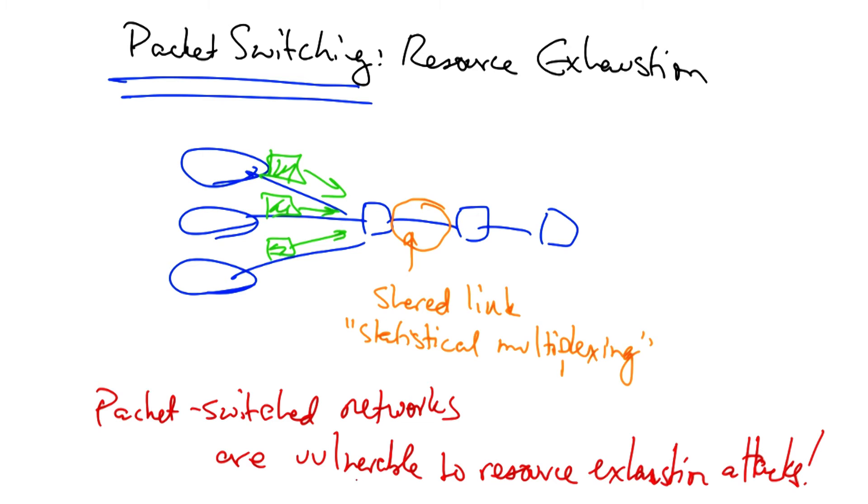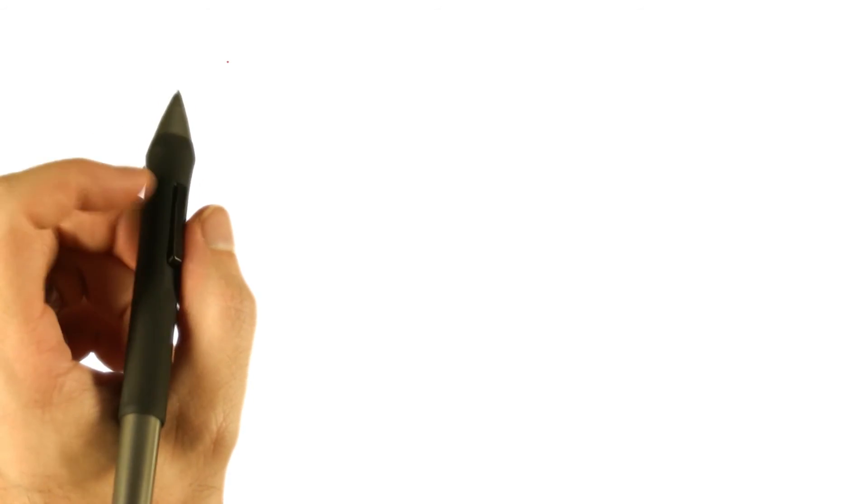Packet switch networks are extremely vulnerable to resource exhaustion attacks. Resource exhaustion attacks threaten a basic component of security known as availability. Let's take a look at other components of security as well.